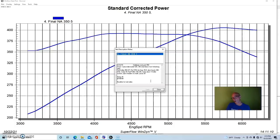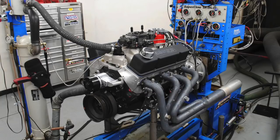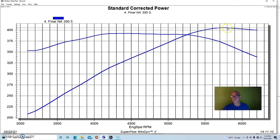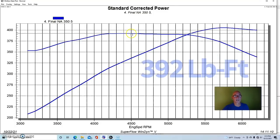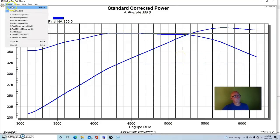It had a Performer RPM Air Gap. We ran with the long tube headers and MSD distributor. This small block produced 405 horsepower and 392 foot-pounds of torque.